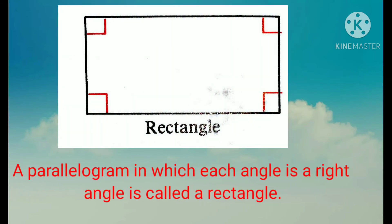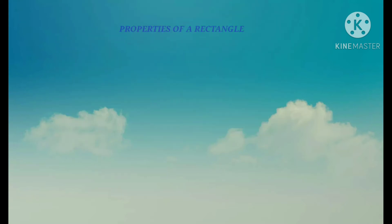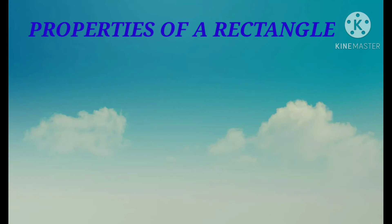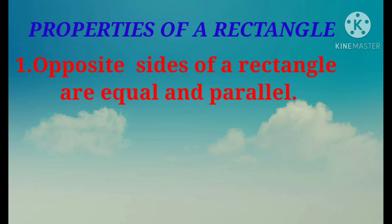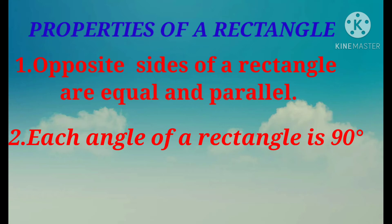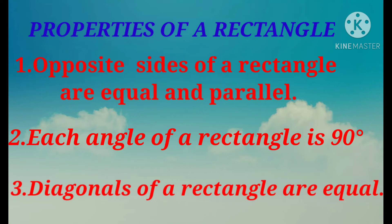A parallelogram in which each angle is a right angle is called a rectangle. Properties of rectangle are: first, opposite sides of a rectangle are equal and parallel. Second, each angle of a rectangle is 90 degrees. And third, the diagonals of a rectangle are equal.